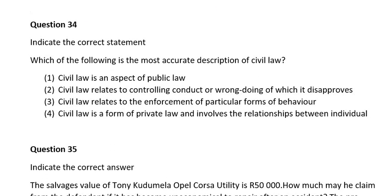Question thirty-four. Indicate the correct statement. Which of the following is the most accurate description of civil law? Number one, civil law is an aspect of public law; number two, civil law relates to controlling conduct or wrongdoing of which it disapproves; number three, civil law relates to the enforcement of a particular form of behavior; number four, civil law is a form of private law and involves the relationships between individuals. The correct answer is number four: civil law is a form of private law and involves the relationship between individuals.